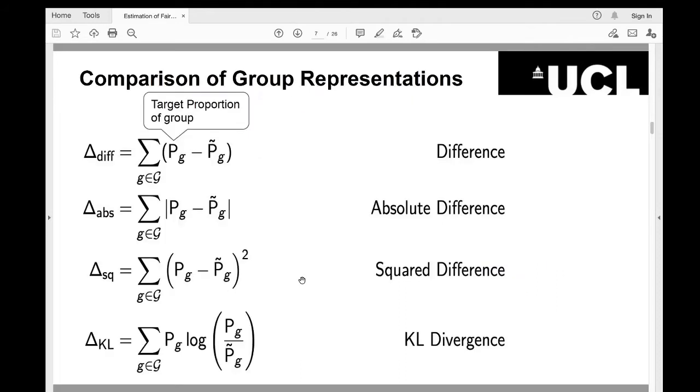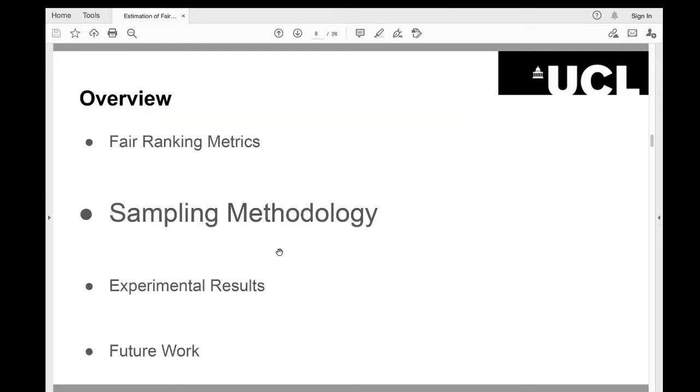After measuring group representation, we might come up with metrics that compute divergence between the target and the actual representation. Here, PG denotes target proportion of group and P tilde G denotes the system's actual proportion of a group in ranking K. We might use some linear functions or square difference or KL divergence to compute the divergence between the actual and the target value. By the way, target value is given by either a lawmaker or an application owner to the fairness researcher.